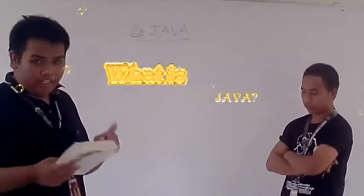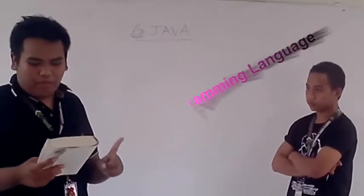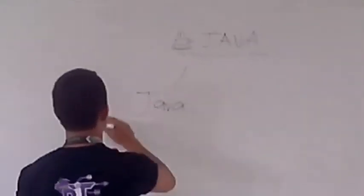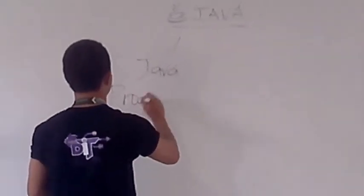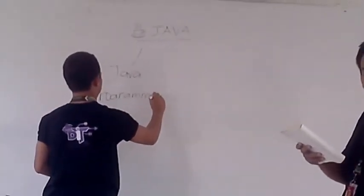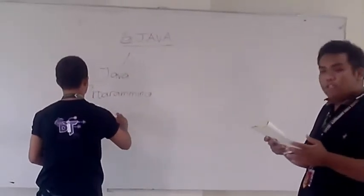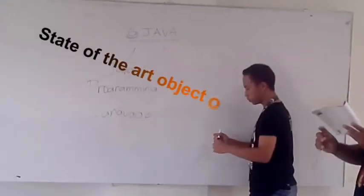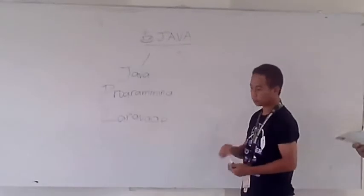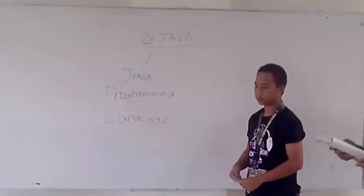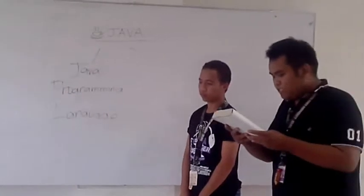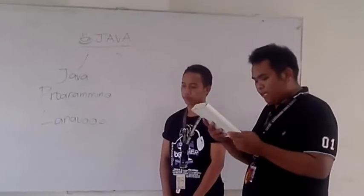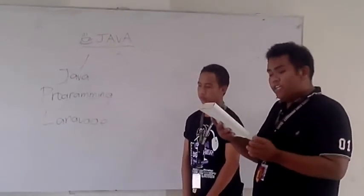In discussing Java, it is important to distinguish between the Java programming language and the Java platform. The Java programming language is the language in which applications, including applets, servlets, and JavaBeans components are written. The Java programming language is a state-of-the-art language that has a syntax similar to simpler languages. The design is intended to make the Java language powerful, but at the same time eliminate the complex features found in less reliable languages.